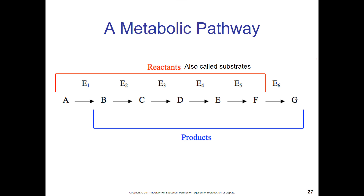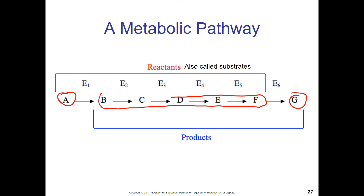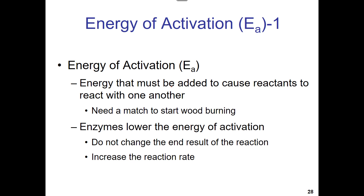This slide shows an overall metabolic pathway: A is the substrate or starting material, G is the product, and B through F are all intermediates.